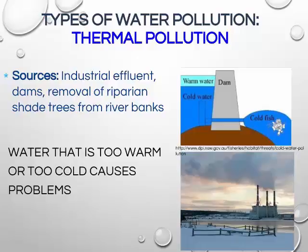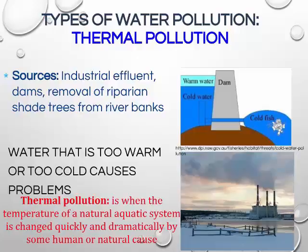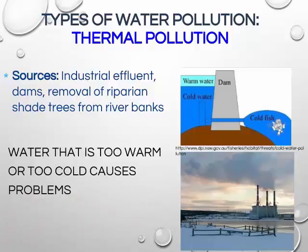One type of pollution that most people don't realize is a problem is thermal pollution — when the temperature of a natural aquatic system is changed quickly and dramatically by human or natural causes. For example, industrial facilities often build a holding pond to pull cold water in to cool their machines, then pump the warmer water back, shocking organisms adapted to cooler temperatures.